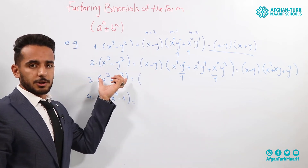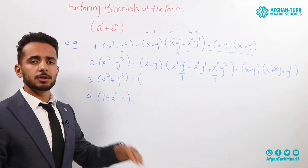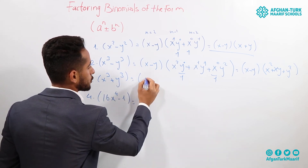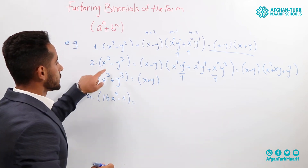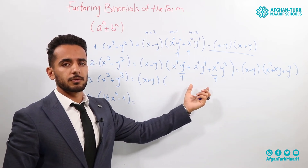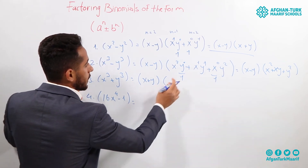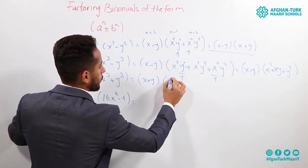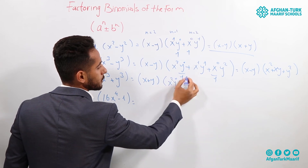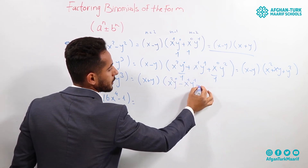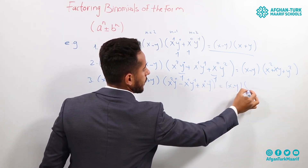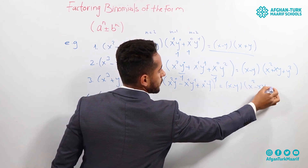Third question: since the power is odd and the operation is positive, the first parenthesis is x plus y. In the second parenthesis, the signs alternate: first positive, second negative, third positive. So: x to the power of 2 times y to the power of 0, minus x to the power of 1 times y to the power of 1, plus x to the power of 0 times y to the power of 2. The answer is x plus y times x squared minus xy plus y squared.